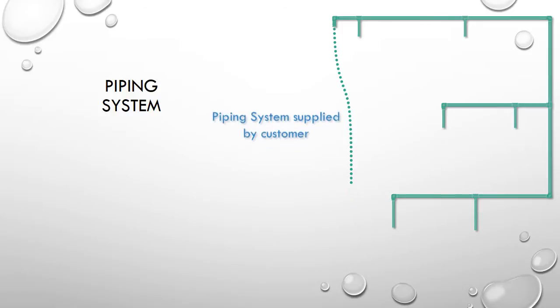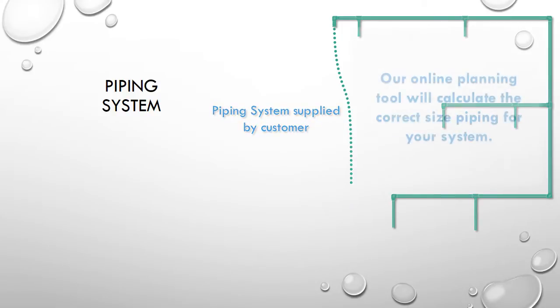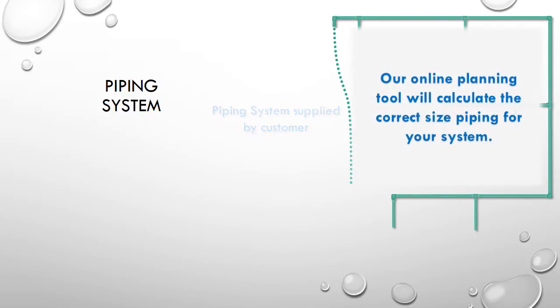The piping system is supplied by the customer. Our online planning tool helps calculate the correct size for the piping system based on the applicators that will be part of the system.